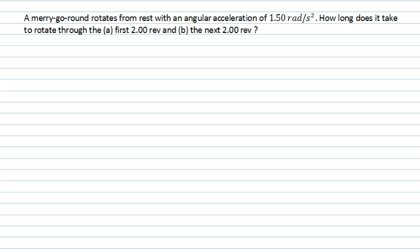This PhysCast deals with rotational motion. We're asked to consider a merry-go-round which rotates from rest with an angular acceleration of 1.5 radians per second squared. What we want to find out is how long does it take to rotate through the first two revolutions and then for the next two revolutions.